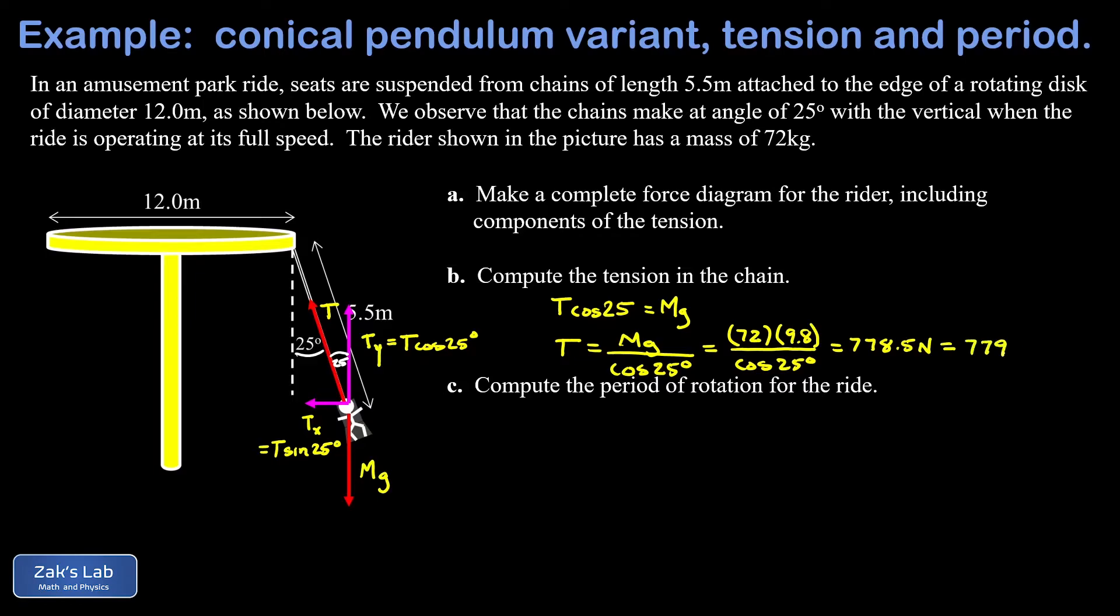In part C we get into the uniform circular motion analysis. We want the period of rotation for the ride. It's not entirely obvious how we end up being able to find this, but I do see intuitively that the faster this ride goes, the higher the angle is going to be for the riders. To get a handle on it, we just write down Newton's second law: F net equals ma.